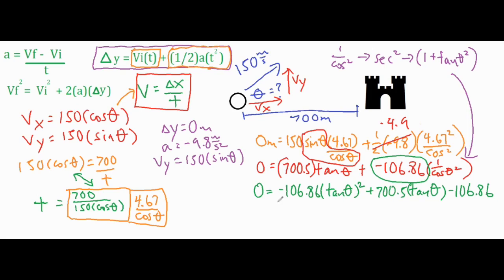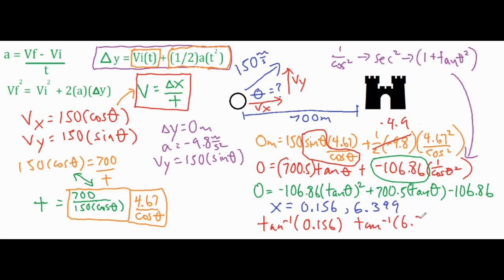Solving the quadratic gives two values for tangent of theta: 0.156 and 6.399. These are not angles themselves — they are the tangent of theta. Taking the inverse tangent of 0.156 and of 6.399 gives us the two angles: approximately 8.87 degrees and 81.12 degrees.